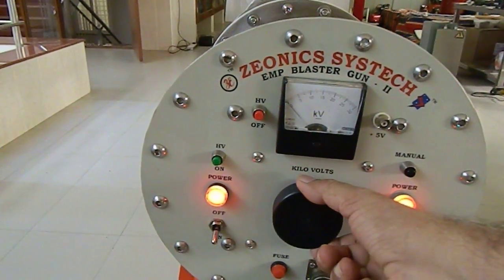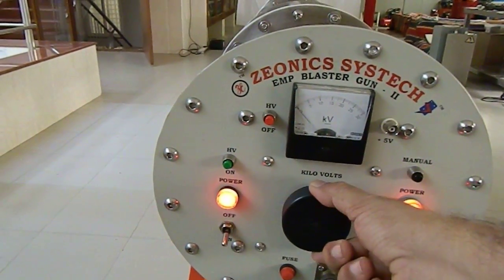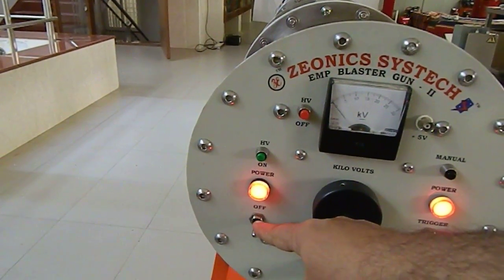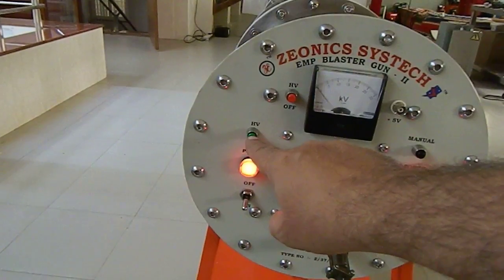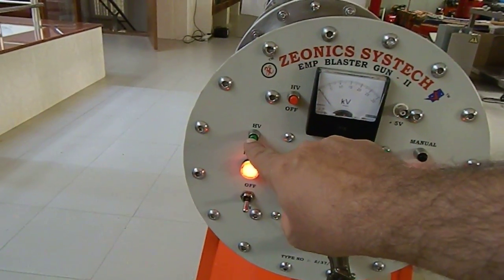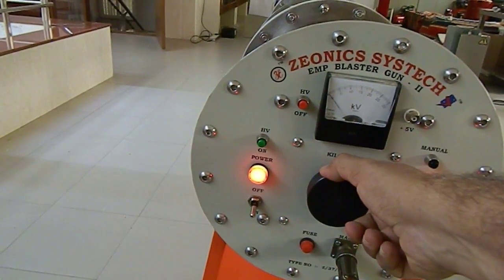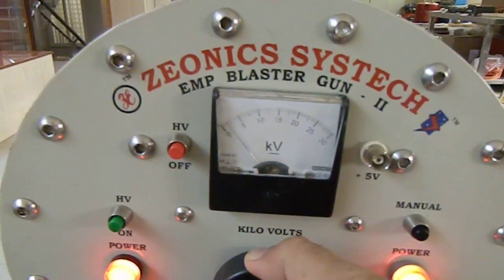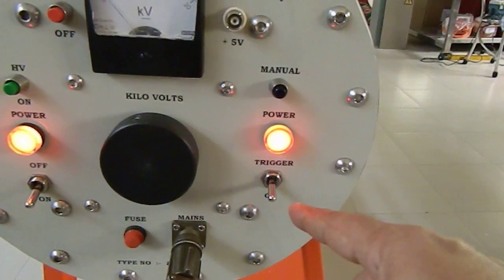This is the high voltage on-off switch. This is the power on-off. Once high voltage is switched on, then one can slowly vary the voltage and we can see the voltage will go up. This is the trigger mechanism which is optional. Best results are obtained while directly firing the system without trigger.